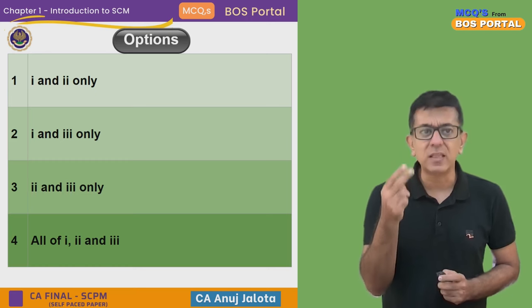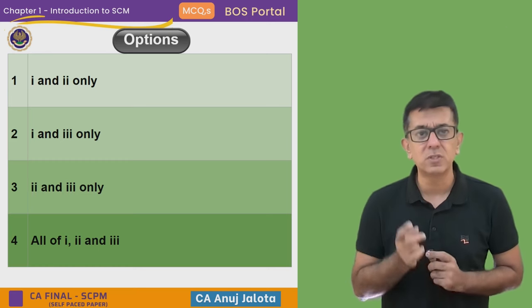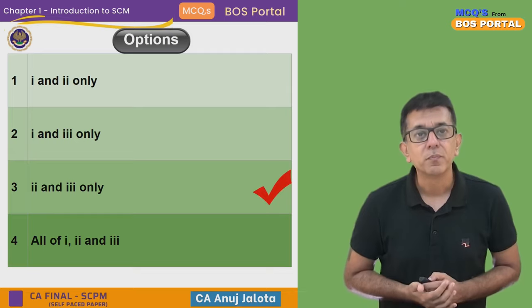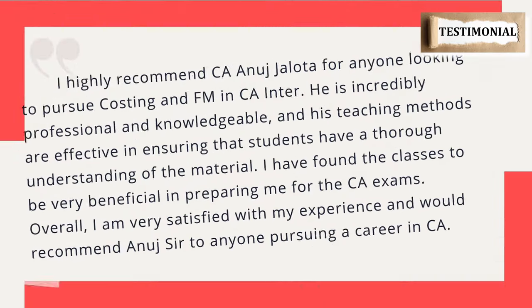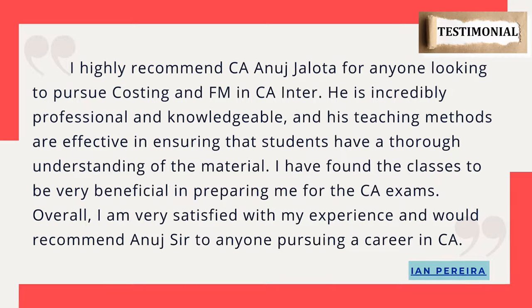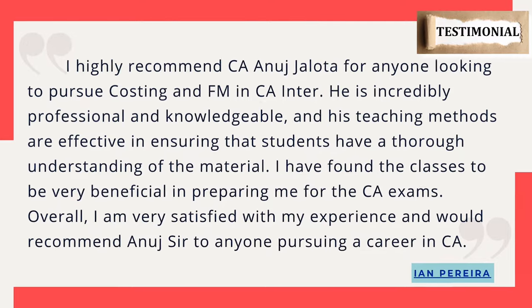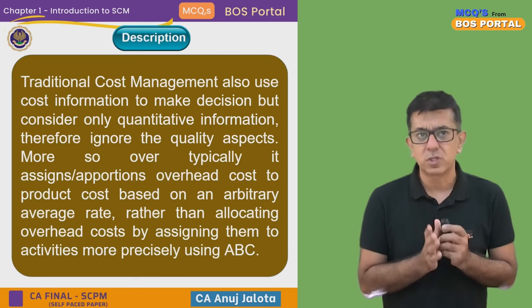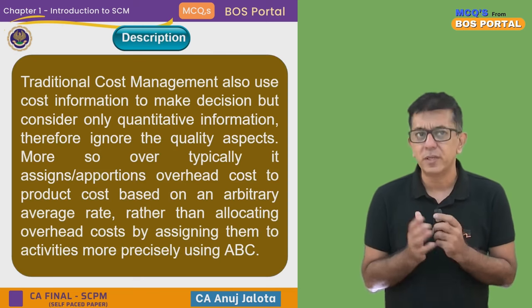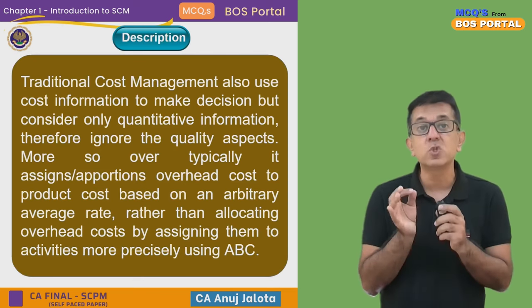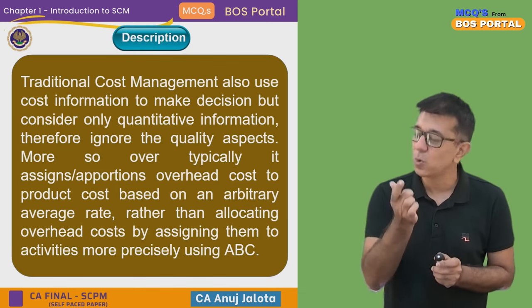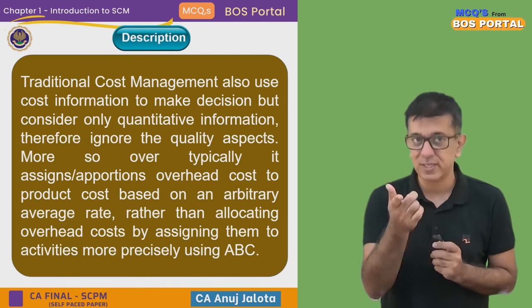So the correct answer is option two and three — traditional cost management does not talk about activity-based costing or qualitative aspects. ICAI says traditional cost management uses cost information to make decisions but only considers quantitative information, and therefore ignores qualitative aspects.